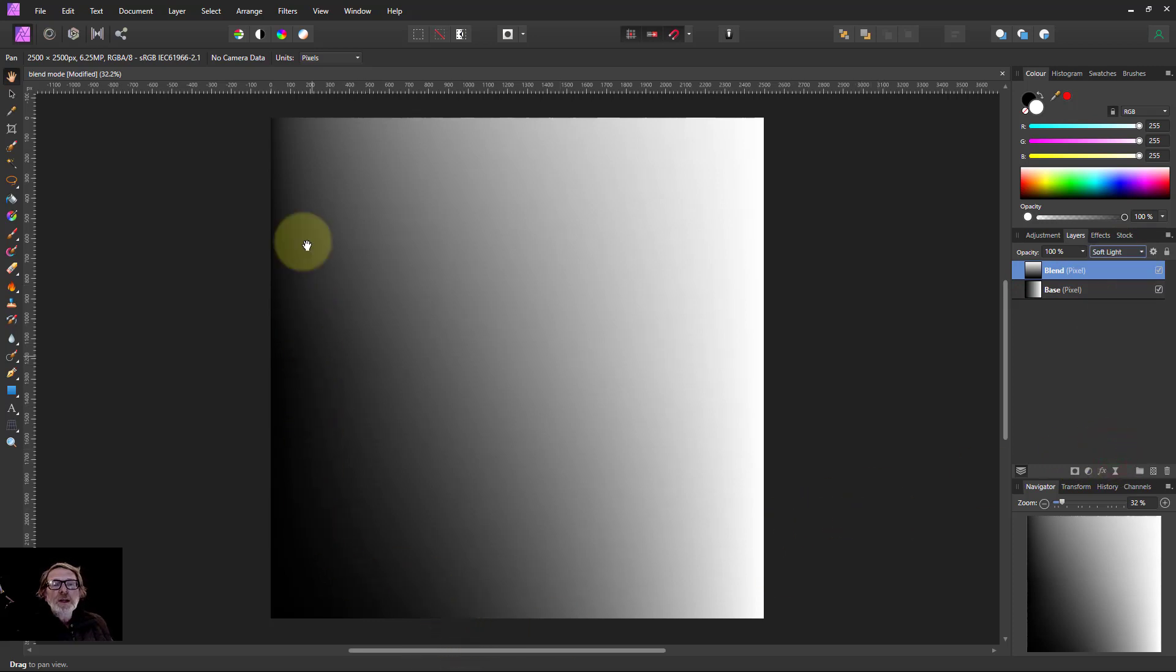And then if we set the blend mode of that to Soft Light, you can see the effect you've got there. And you can see here blacks from the base layer stay black, whites stay white. And you get a different effect when a blend layer is dark down here as you do when it's white up here.